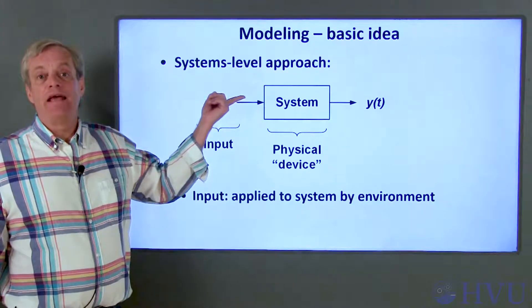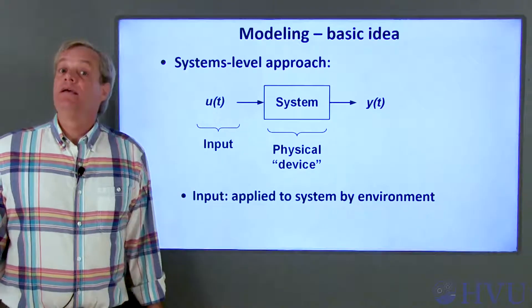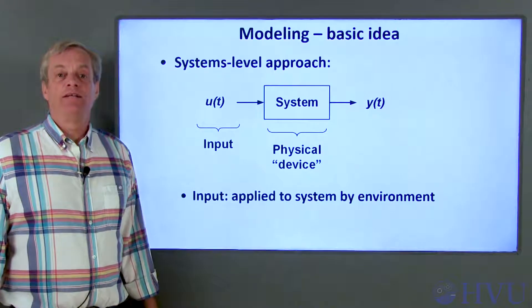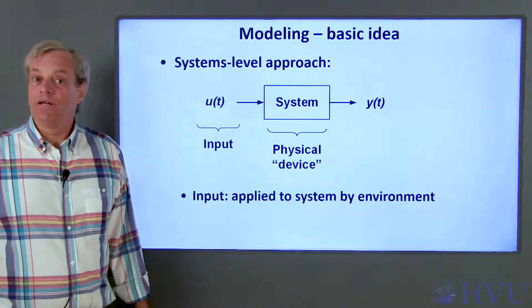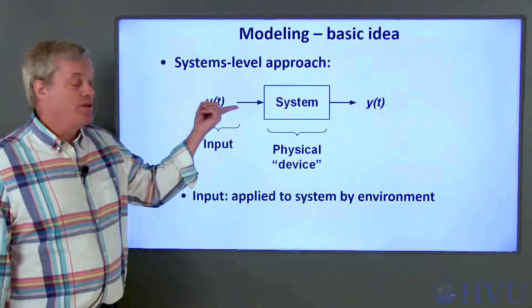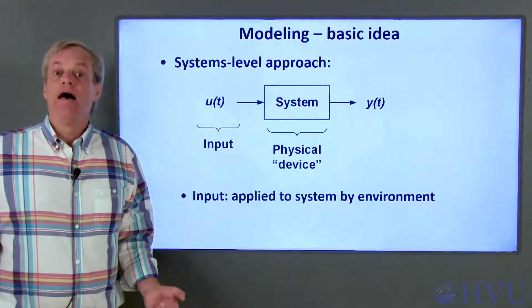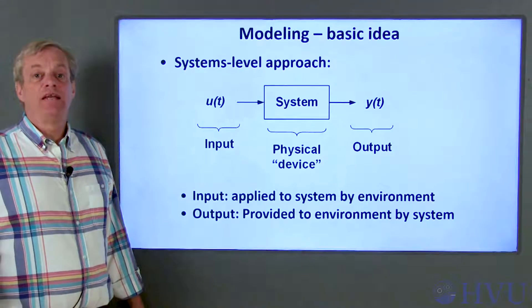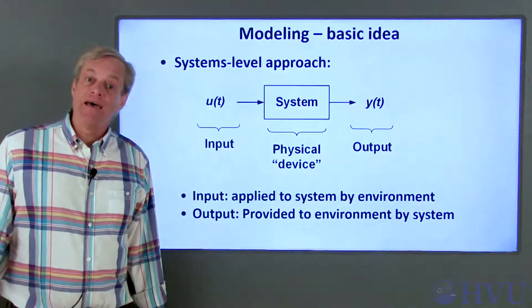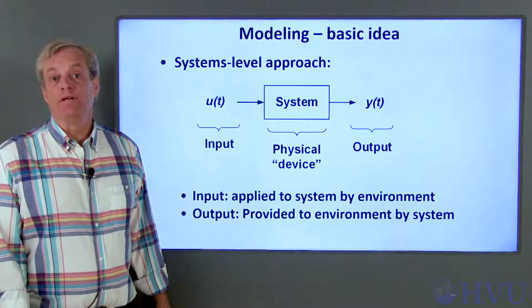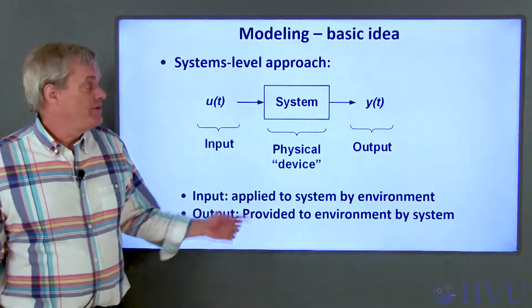Inputs to a system are indicated by an arrow entering the block. Inputs can be considered to be applied to the system from outside the system. As an example, in a car, the input could be how much you push on the gas pedal. Outputs from the system are indicated by an arrow leaving the block. The output is provided by the system to the outside environment. The output from a car could be the car's speed.